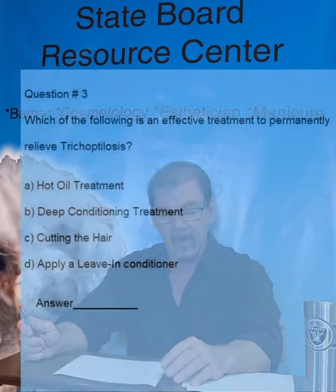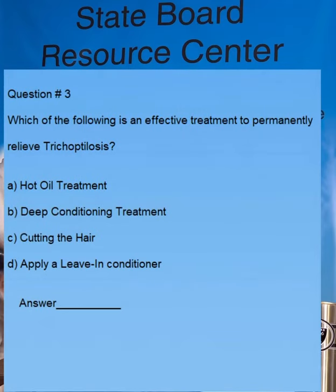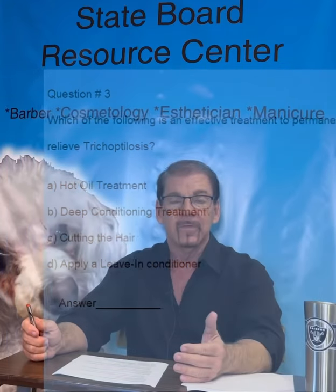Finally, question three: which of the following is an effective treatment? Once again, the answer is C, cutting the hair. Tricoptylosis is a very fancy medical term you'll probably never use again in your career — it means split ends. As I said, the test is about vocabulary. If you don't understand tricoptylosis, you can't answer the question. Once you realize that's hair, you have to cut off the split ends.